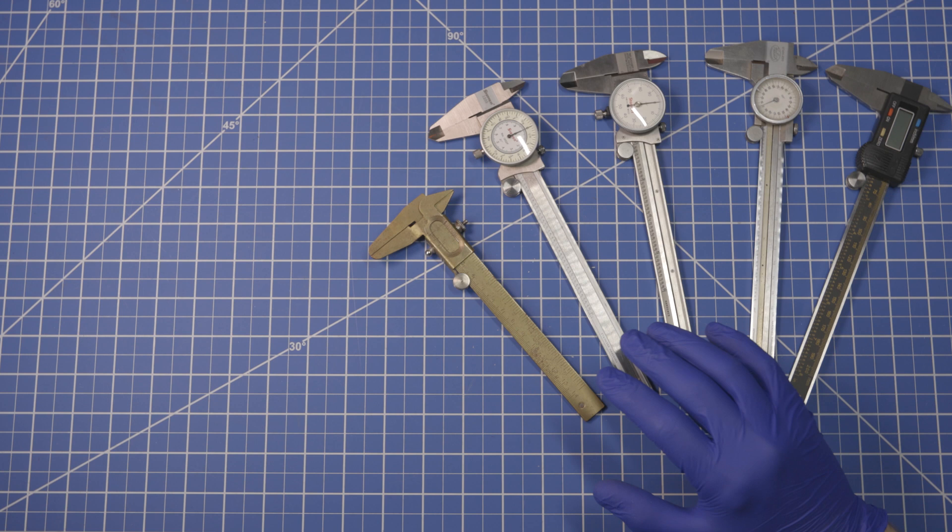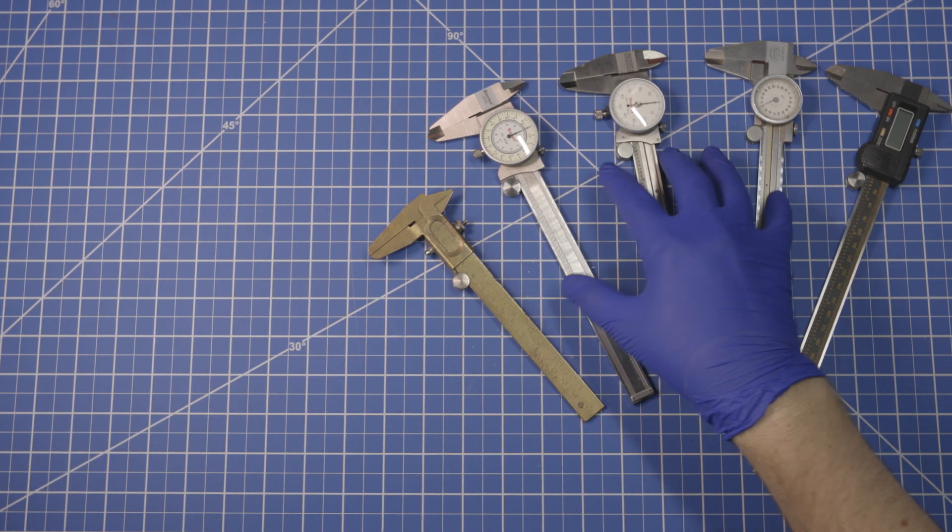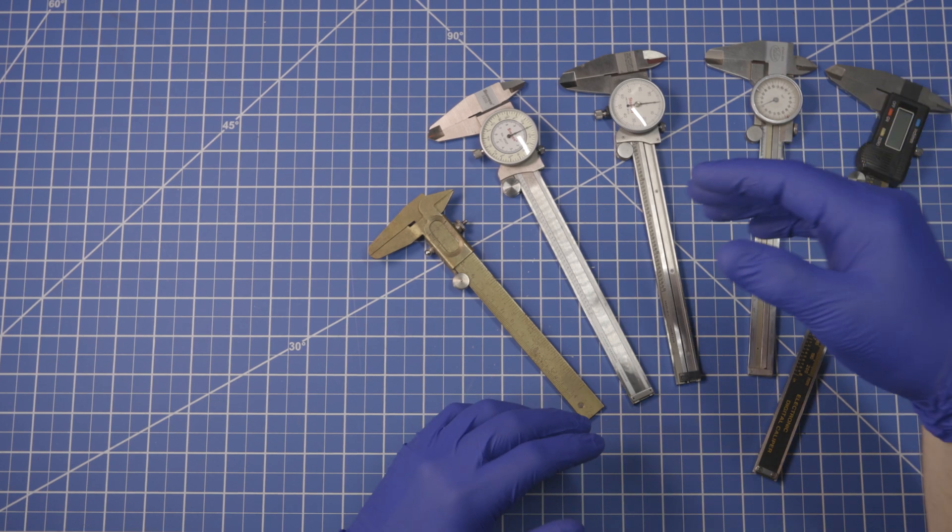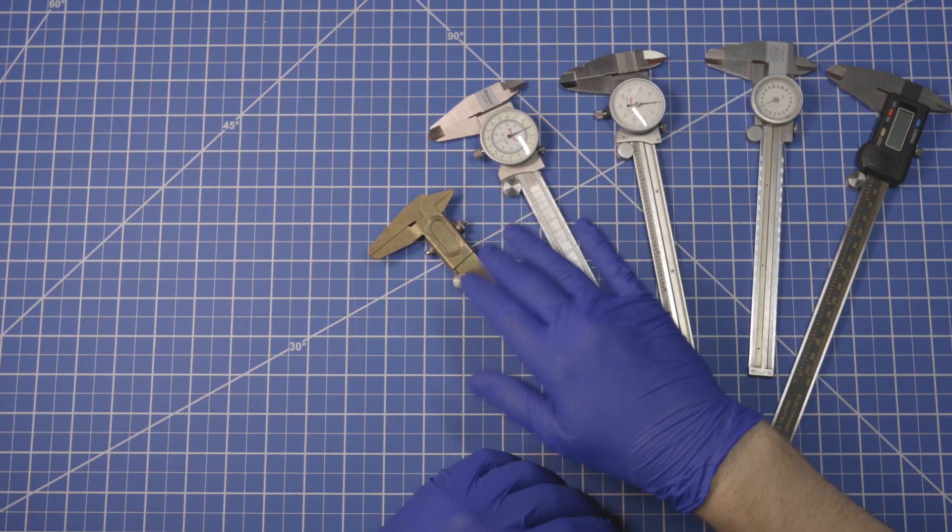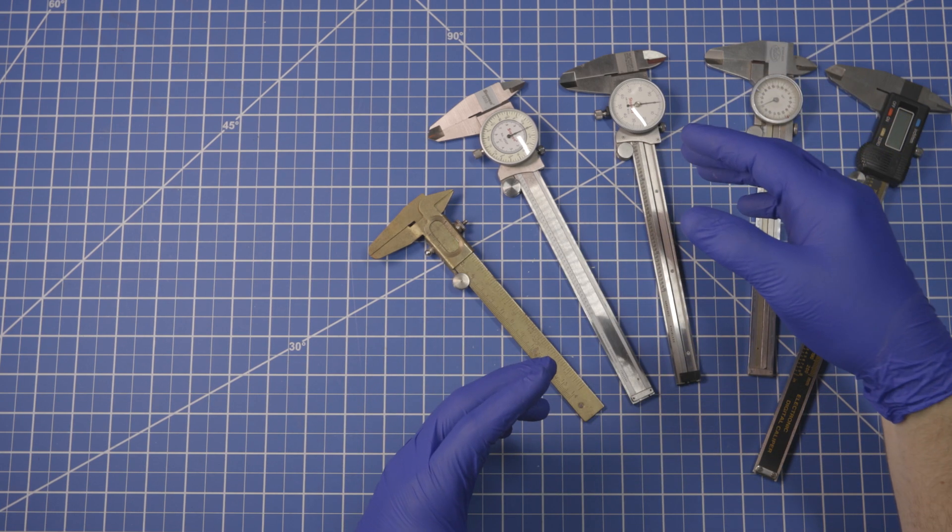We're going to talk about a few different basic types of calipers. We have veneer calipers, dial calipers, and digital calipers. Now you may hear people refer to all of these things as veneer calipers, but technically they're not.